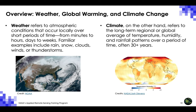Climate, on the other hand, refers to the long-term local, regional, or global average of temperature, humidity, and rainfall patterns over a period of time, often 30 or more years. When scientists talk about climate, they're looking at averages of precipitation, temperature, humidity, sunshine, wind velocity, phenomena such as fog, frost, and hail storms, and other measures of the weather that occur over a long period in a particular place, typically 30 or more years.